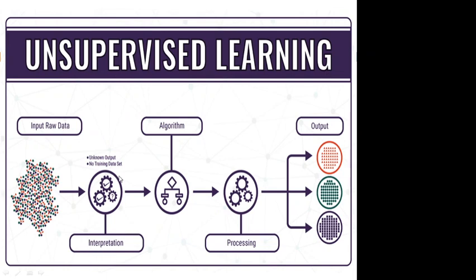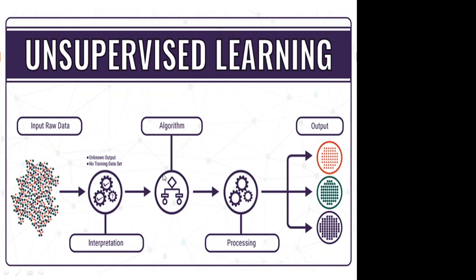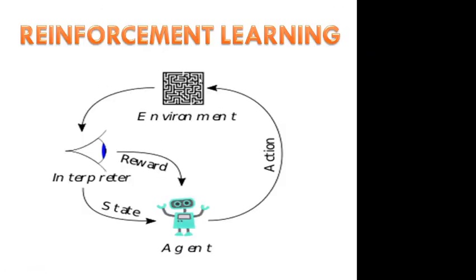For unsupervised learning, the expected output is unknown. We don't know the output. We apply an algorithm and process the output. For reinforcement learning, the critic gives a reward — is it good or not? The state is also considered. If it is good, okay. If it is not good, the action is changed and the performance element is changed. That is reinforcement learning.